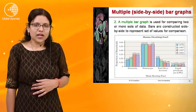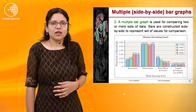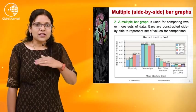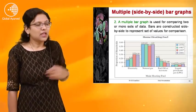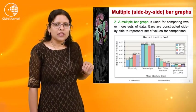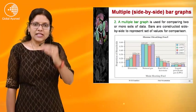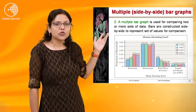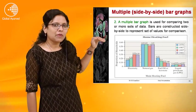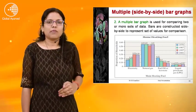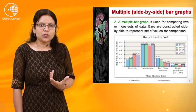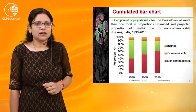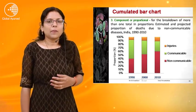The second type is the multiple bar graph, also called side-by-side bar graph. A multiple bar graph is used for comparing two or more sets of data. Bars are constructed side by side to represent the sets of values for comparison. In this diagram there are four variables across four years, and we can identify comparisons easily.